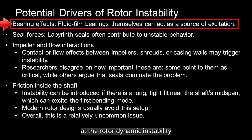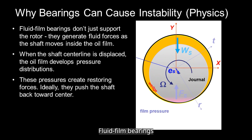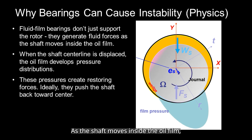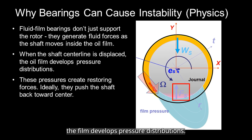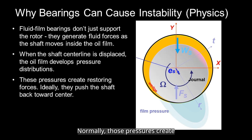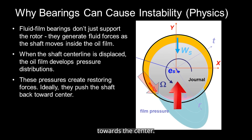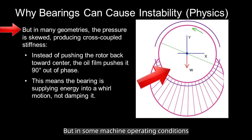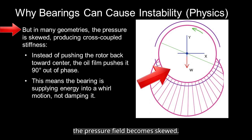Let's first look at rotor dynamic instability due to fluid film bearings. Fluid film bearings do more than just support the rotor. As the shaft moves inside the oil film, the film develops pressure distributions. Normally, those pressures create restoring forces that push the shaft back towards the center — that's the stabilizing effect we want. But in some machine operating conditions and some bearing geometries, the pressure field becomes skewed.